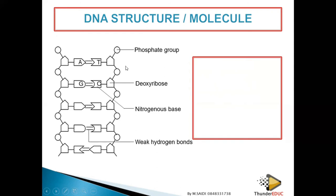Sometimes in exam questions, a diagram is provided and you are asked to identify the bases. If adenine is on one side, thymine will be on the other. If a shape representing adenine is shown on one side, the complementary base on the other side must be thymine. The shape of the base in the diagram indicates which base it is, so you can identify the complementary base automatically.